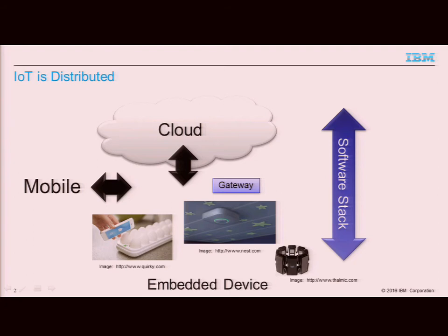Now, in this problem domain, what people really expect is a continuous software stack. It's no longer acceptable to have a separate team working on the back end, a separate team working on the front end, these people only talking to each other through specifications. This will kill you. This is not going to get you to the market in time. These days, you will very often have the same people writing front end and back end. In the end, it's the consequence of a transition towards a more agile and a more DevOps mode of operation.